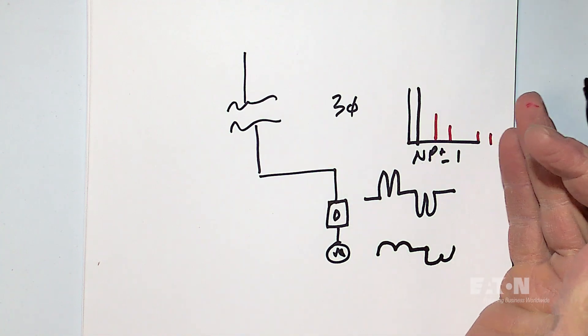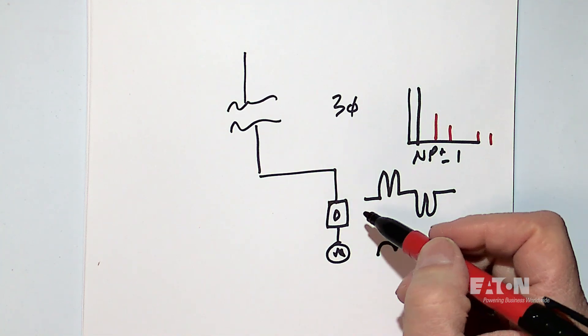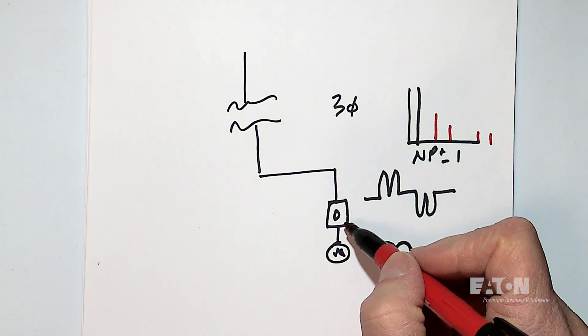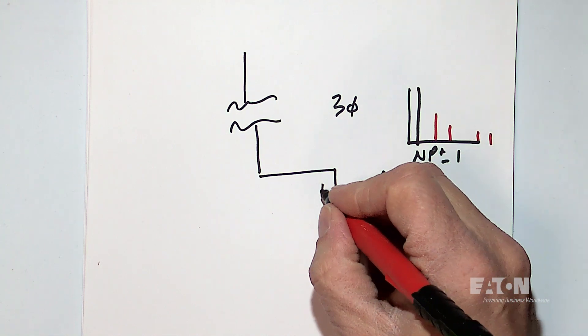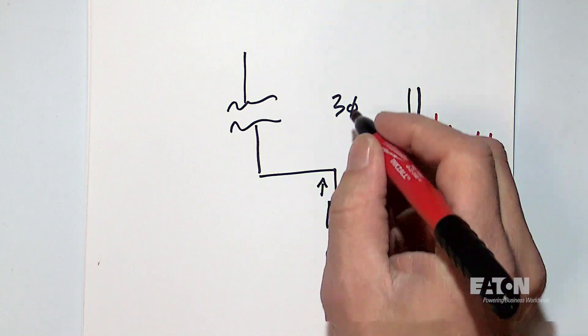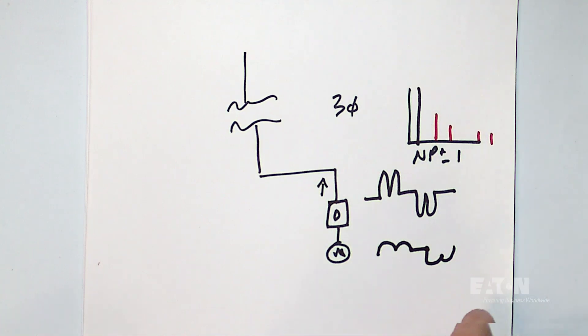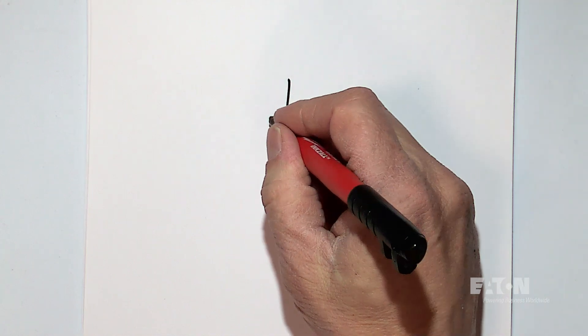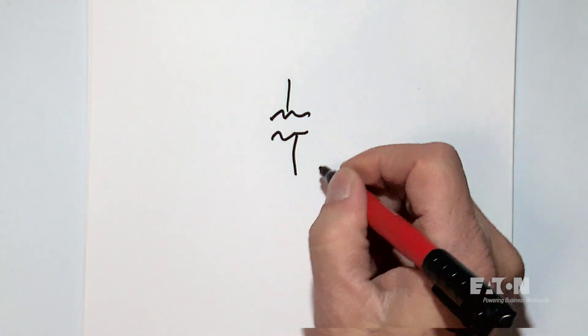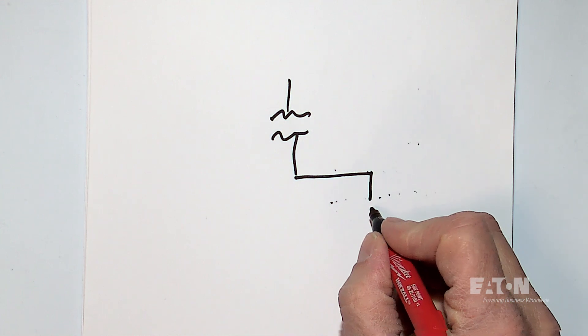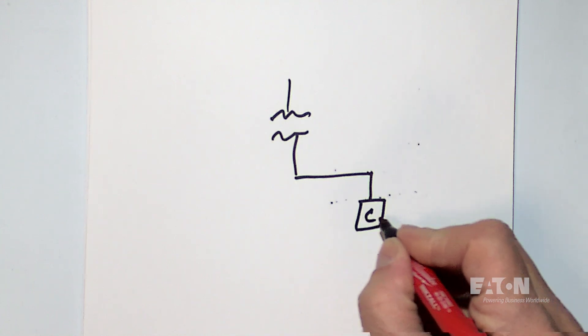This could be rectifiers, it could be anything—even the older UPSs that could produce that harmonic current and send it back onto the power system. Okay, now for a single phase system, let's take a single phase system. It could be a three phase system but with single phase loads. Let's say we have a computer here.